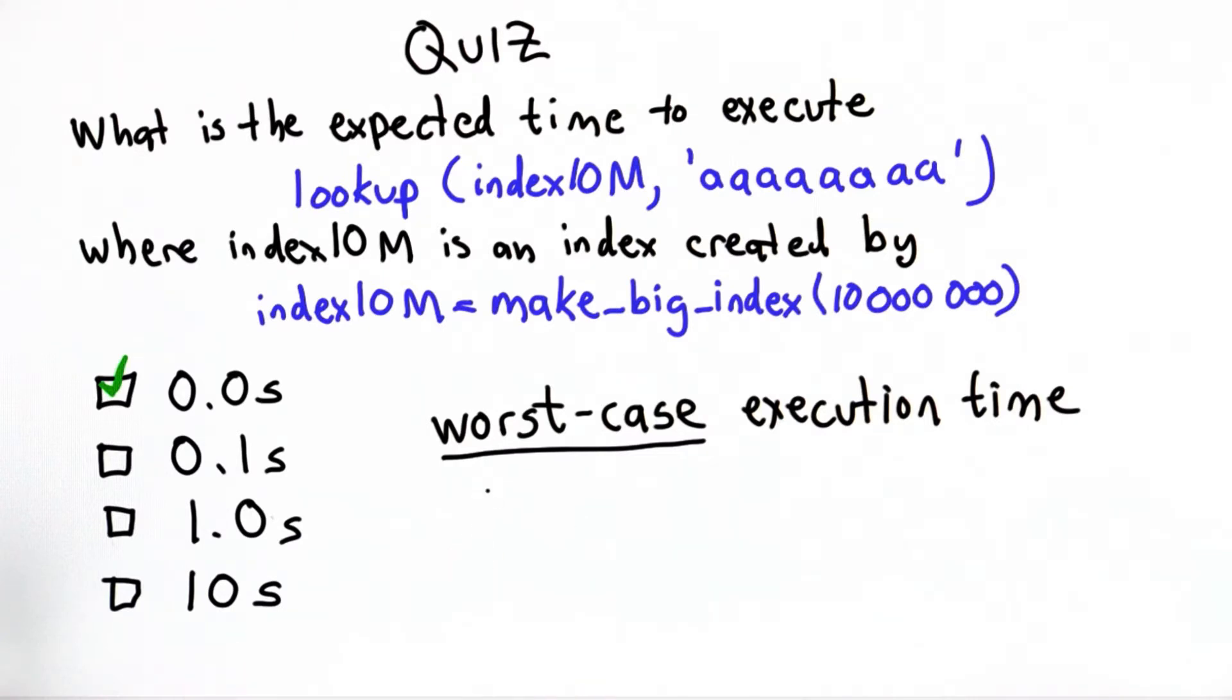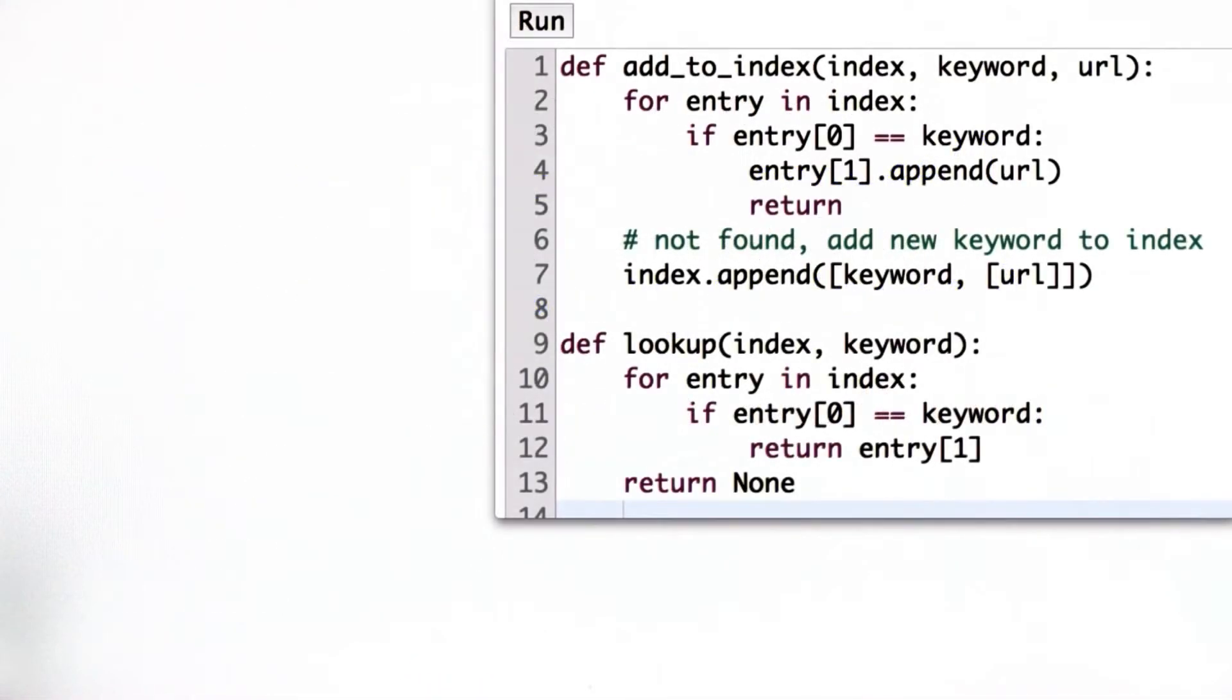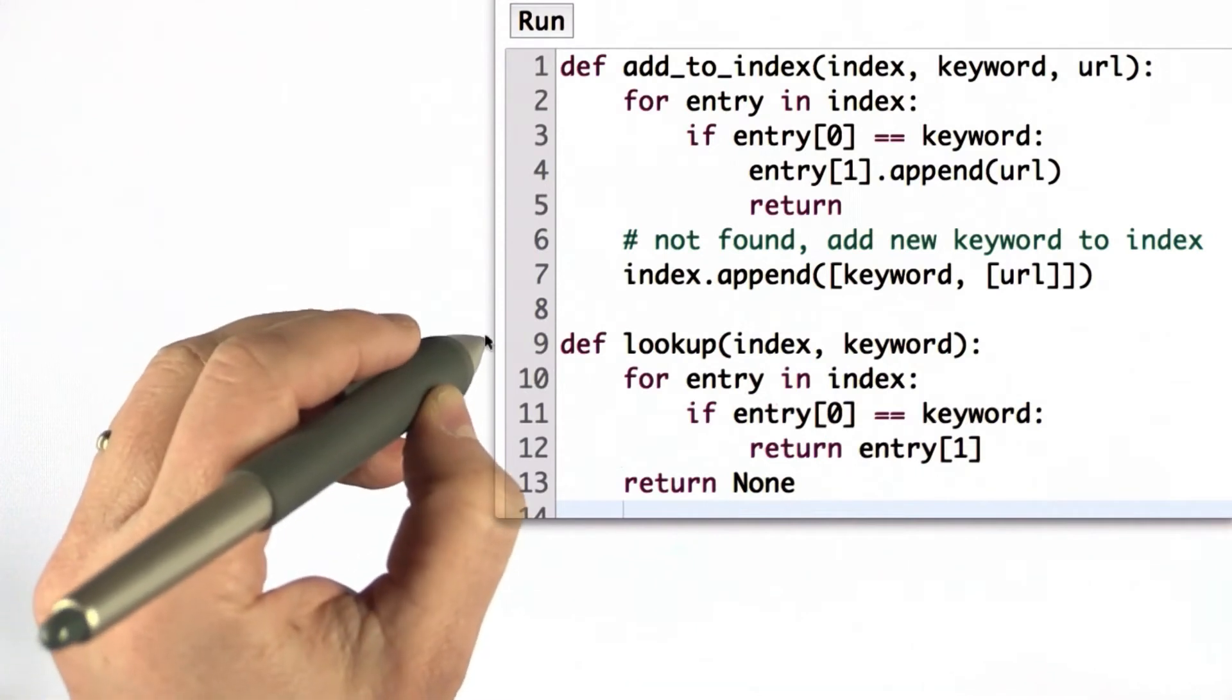Let's look at the code for lookup to understand more why the time scales the way it does and think about what the worst case execution time and what the average case will be. So to get a better understanding of the results we've seen, let's look at the code that we wrote for the index. This is the code that we finished in the last unit.